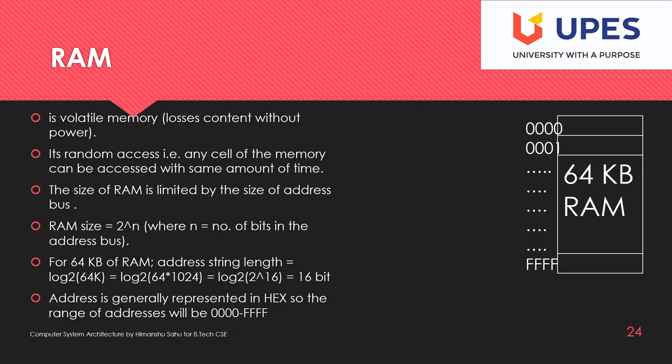We cannot have RAM greater than 4 GB with a 32-bit address bus. We can attach a lesser size of memory but not higher. If you have 64 KB of RAM, the address string length will be log base 2 of 64K, which comes out to 16 bits.